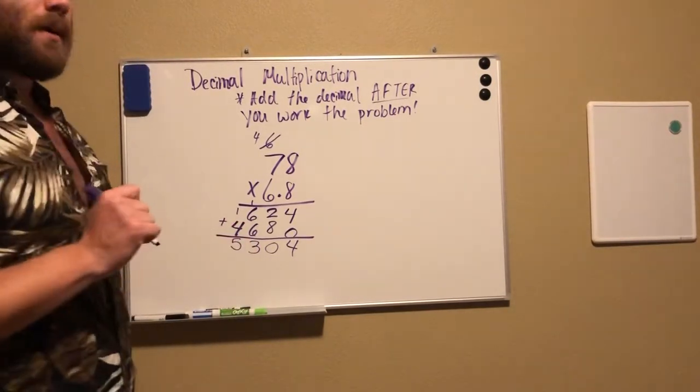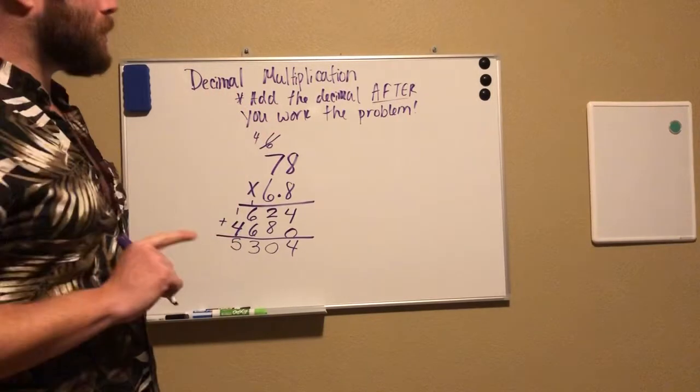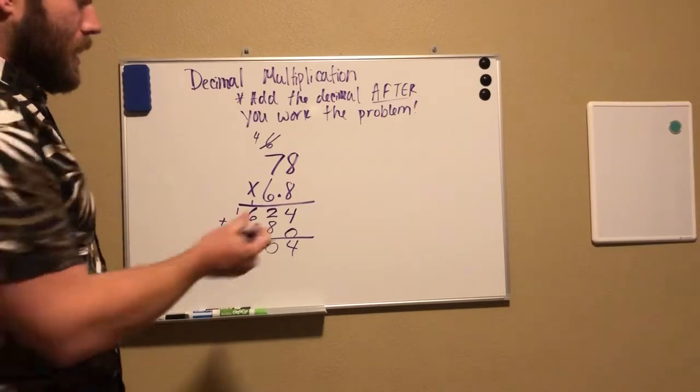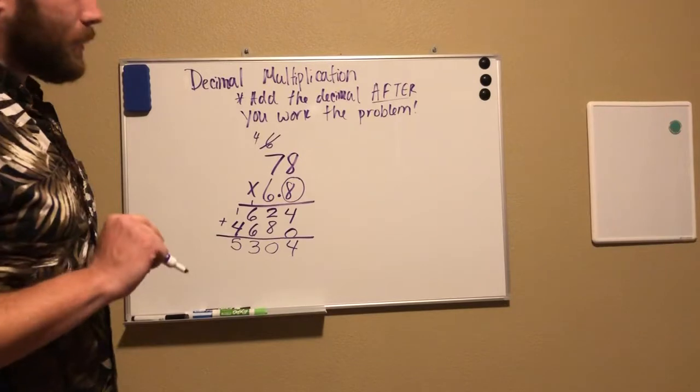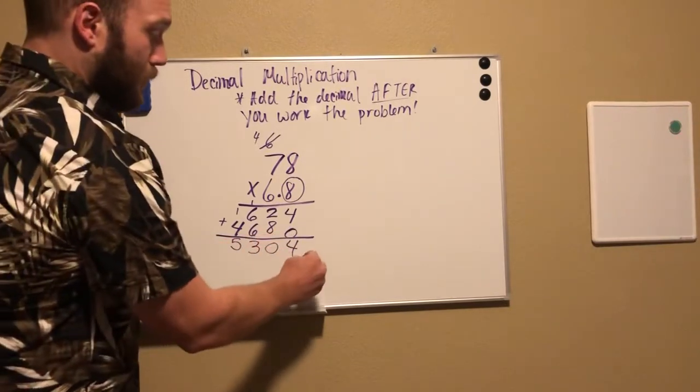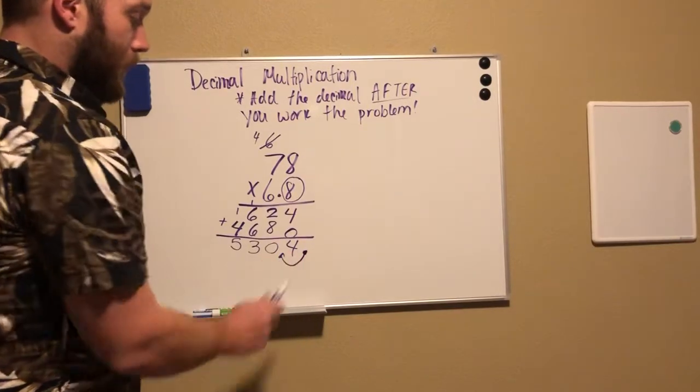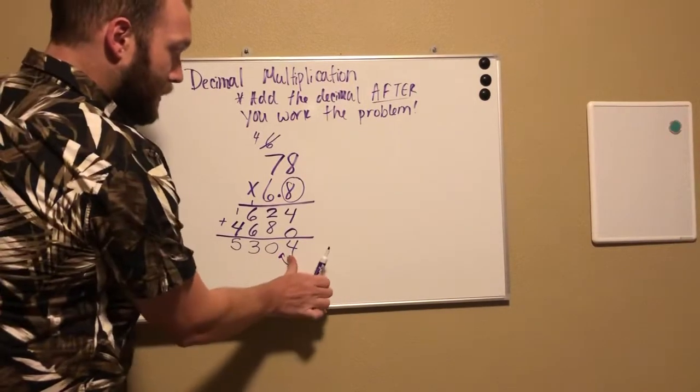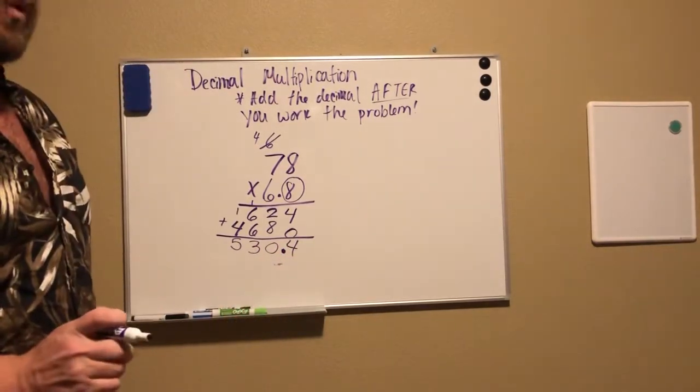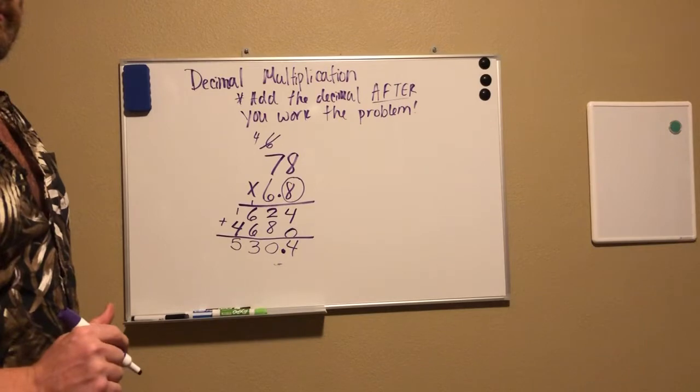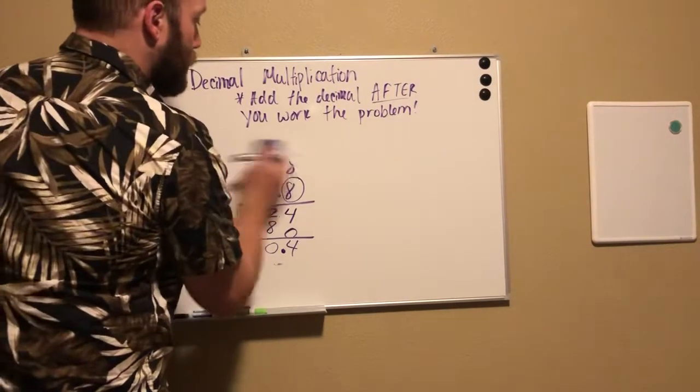All right, now let's go back to what this said: add the decimal after you work the problem. We've worked it, so how many decimal places do we have here? That's right, one. So I need to move my decimal that would be here right now over one. So my answer is five hundred thirty and four tenths. Good job. All right, so you have the rest of those to do on your own.